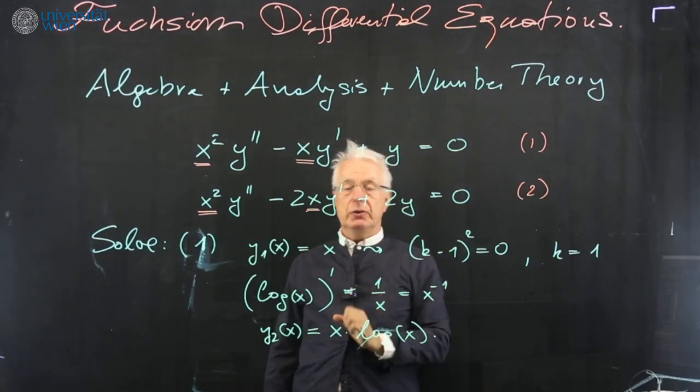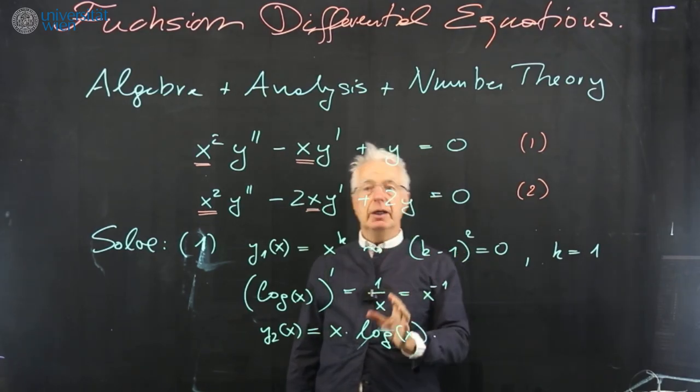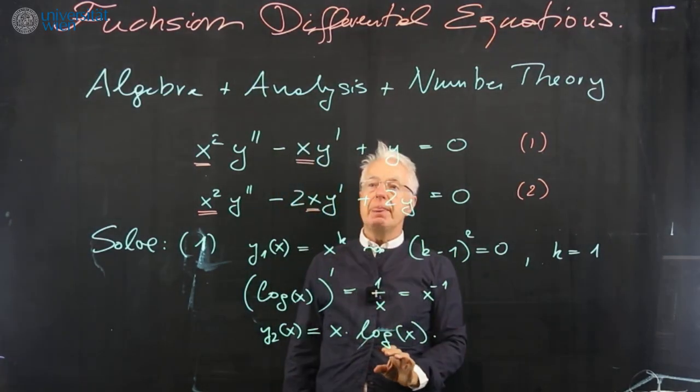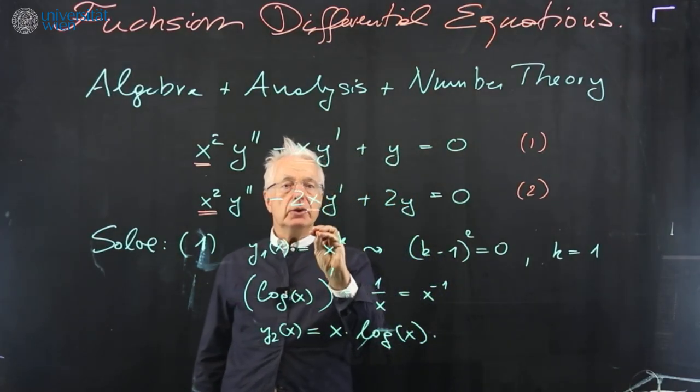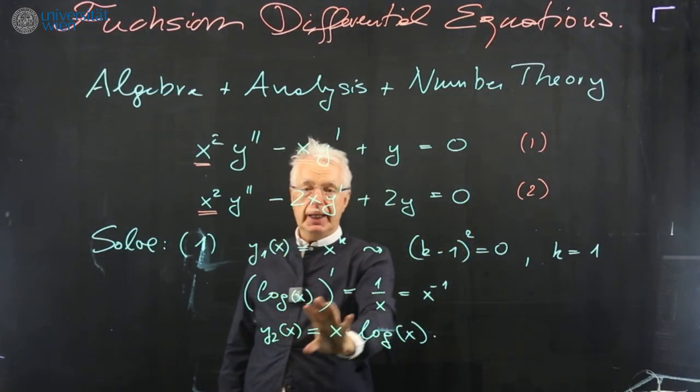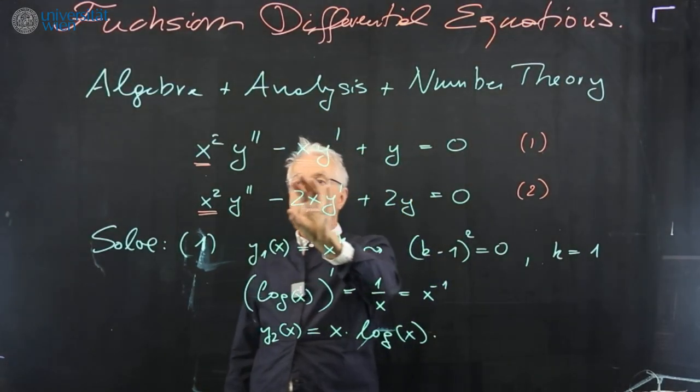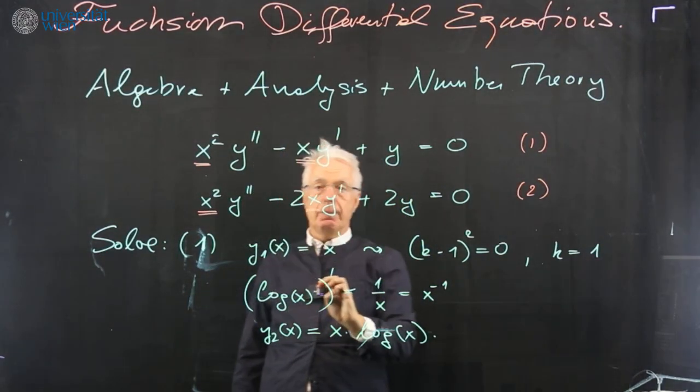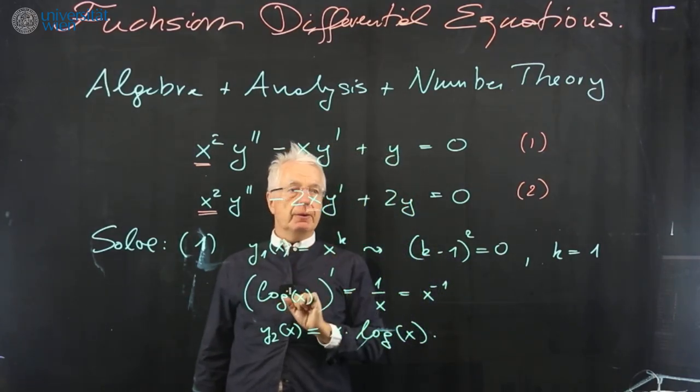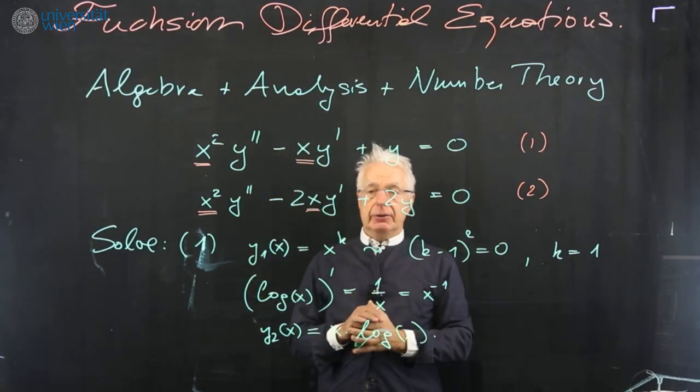In the background, there is this famous Grothendieck-Katz p-curvature conjecture, which is still unsolved and which precisely handles this type of equations. It asks for a criteria to describe when the solutions here have no logarithms and when you look at the power series solutions, when these power series solutions are actually algebraic functions in the sense of satisfying a polynomial equations over the polynomials. So this will be the topic of this class as a website, which I will indicate you here.